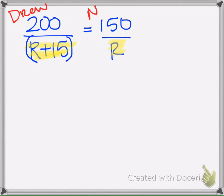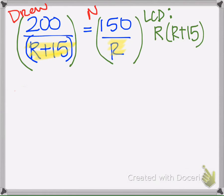Now R plus 15 is together. So the common denominator here, the LCD, is R times R plus 15. So whatever we do to one side, we have to do to the other. So we're going to multiply both sides by R and R plus 15.